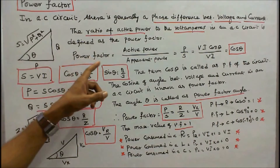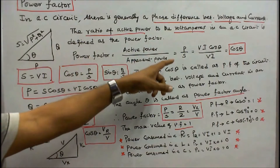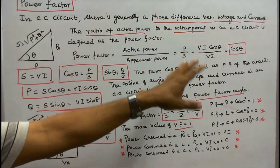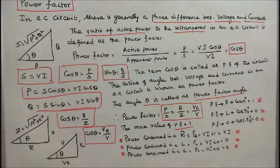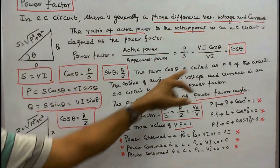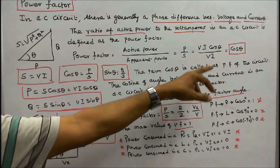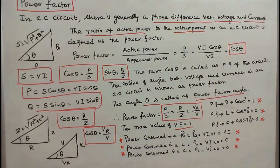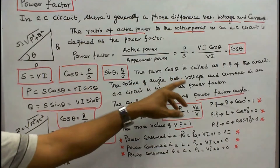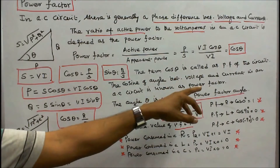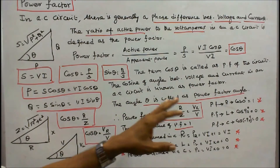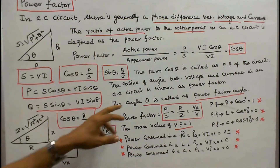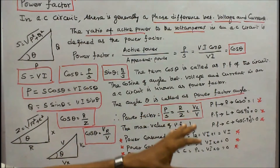Therefore, power factor equals P divided by S, which equals V·I·cos theta divided by V·I, which equals cos theta. The term cos theta is called the power factor of the circuit, or equivalently, the cosine of the angle between voltage and current in an AC circuit is known as the power factor. The angle theta is called the power factor angle.